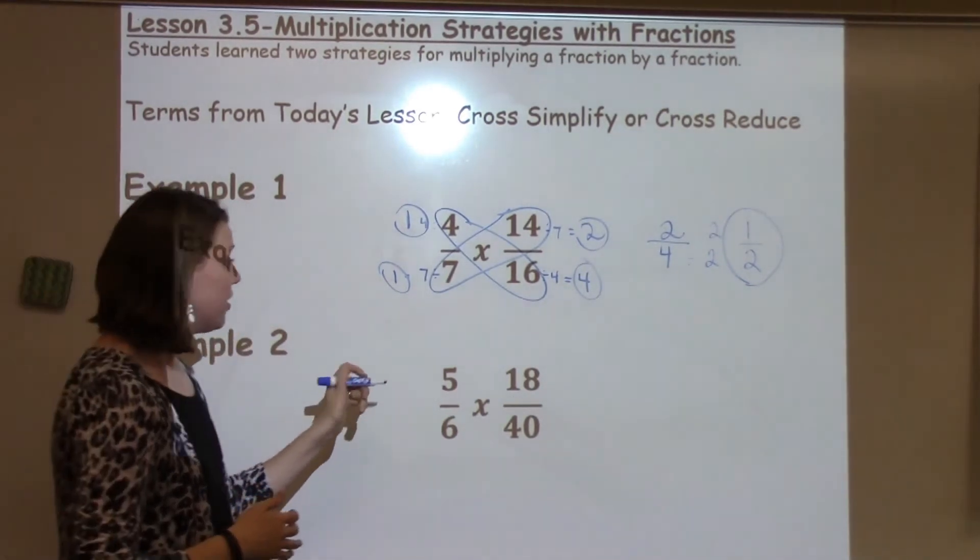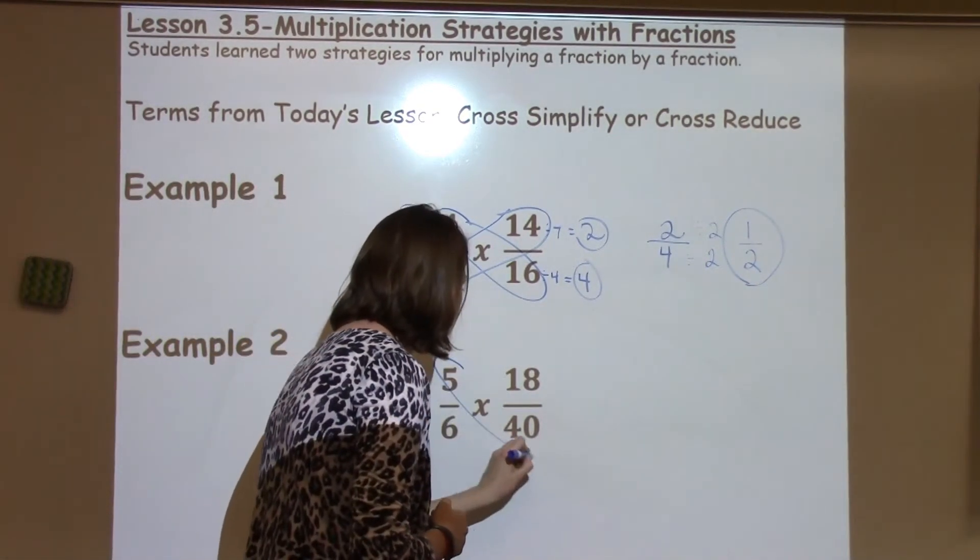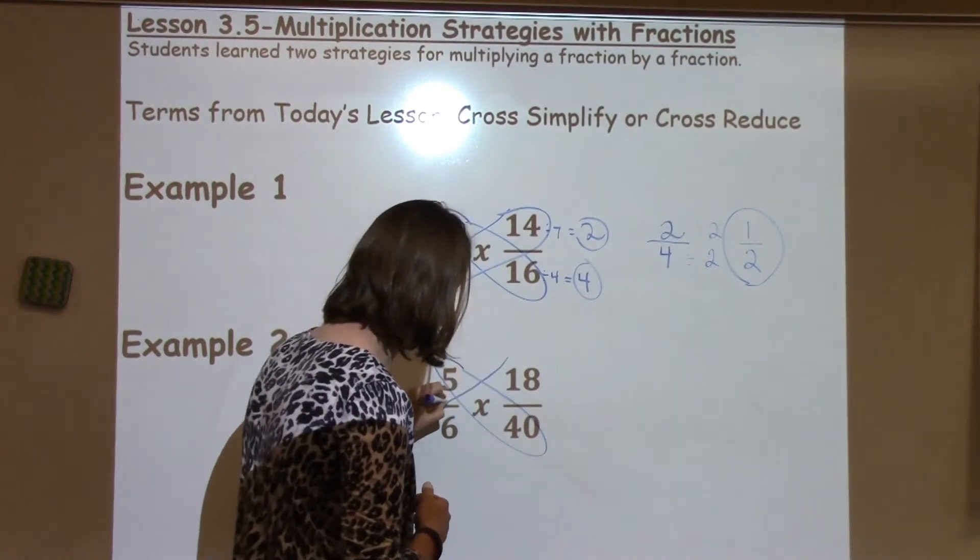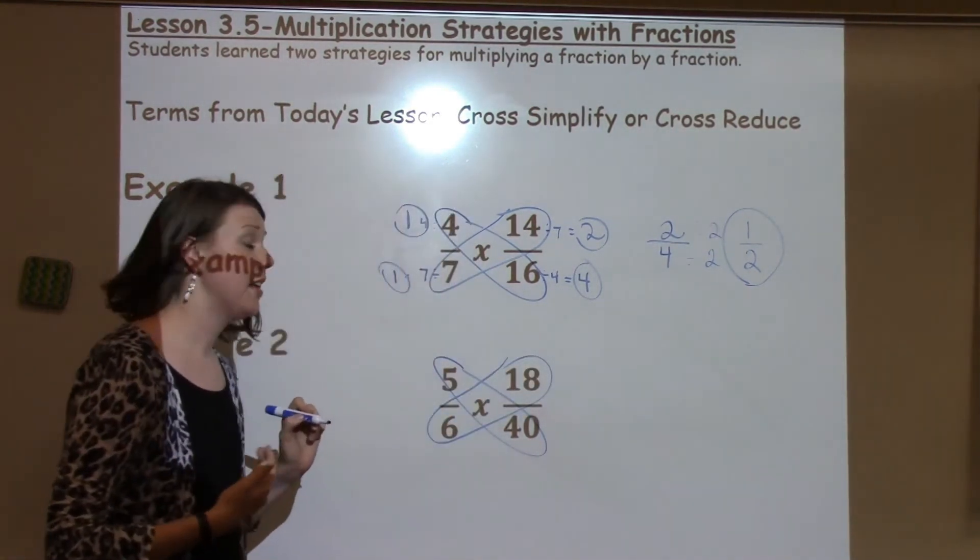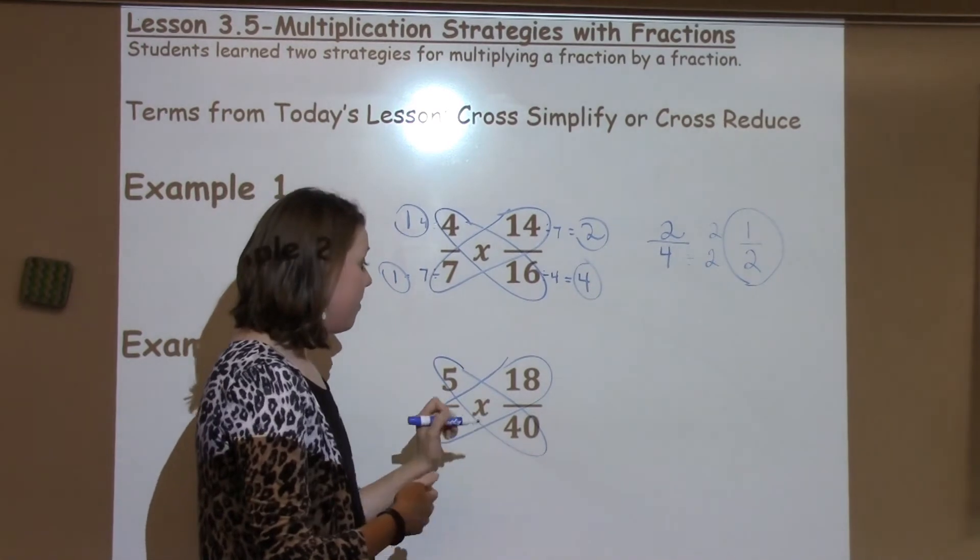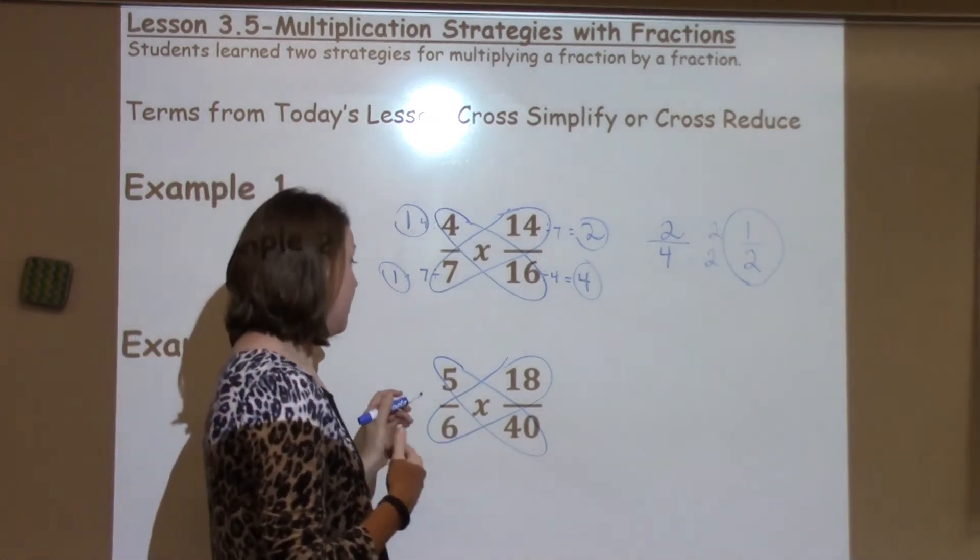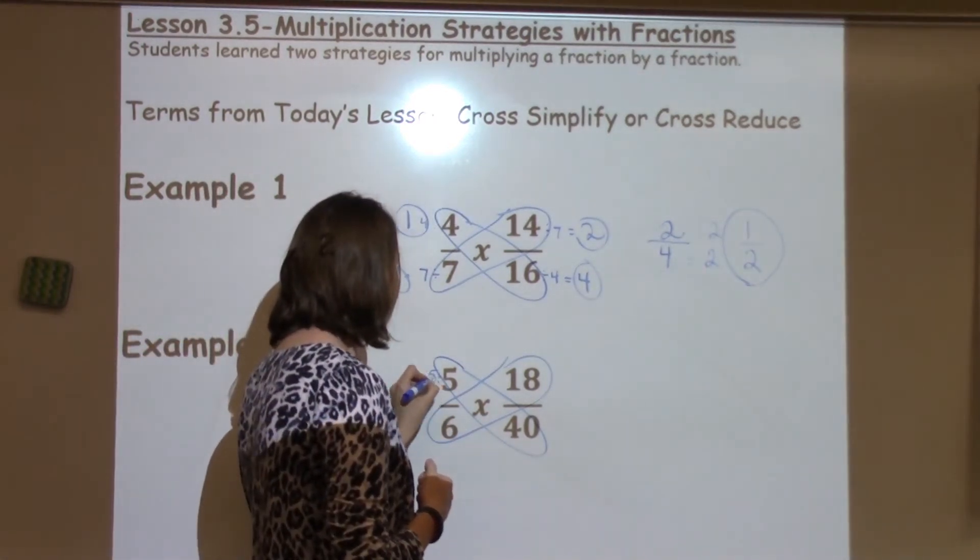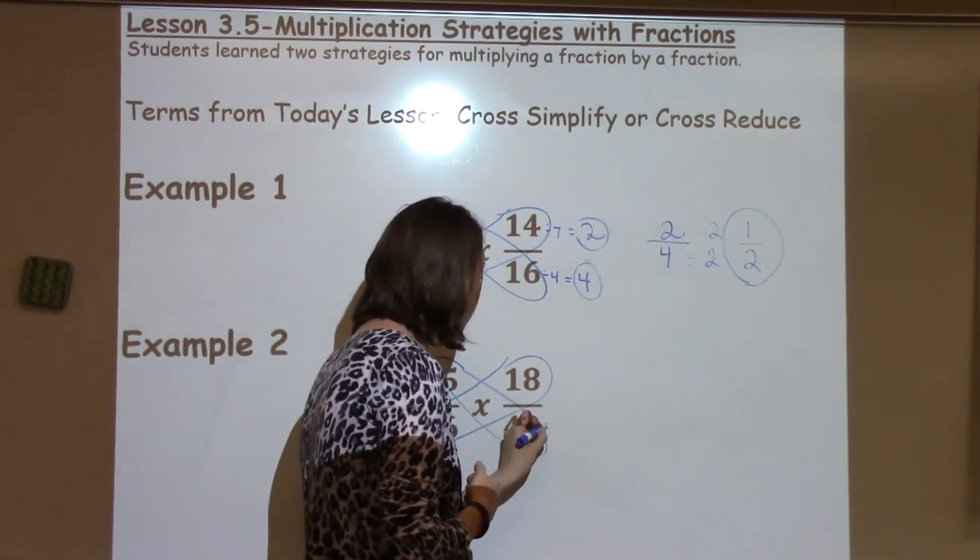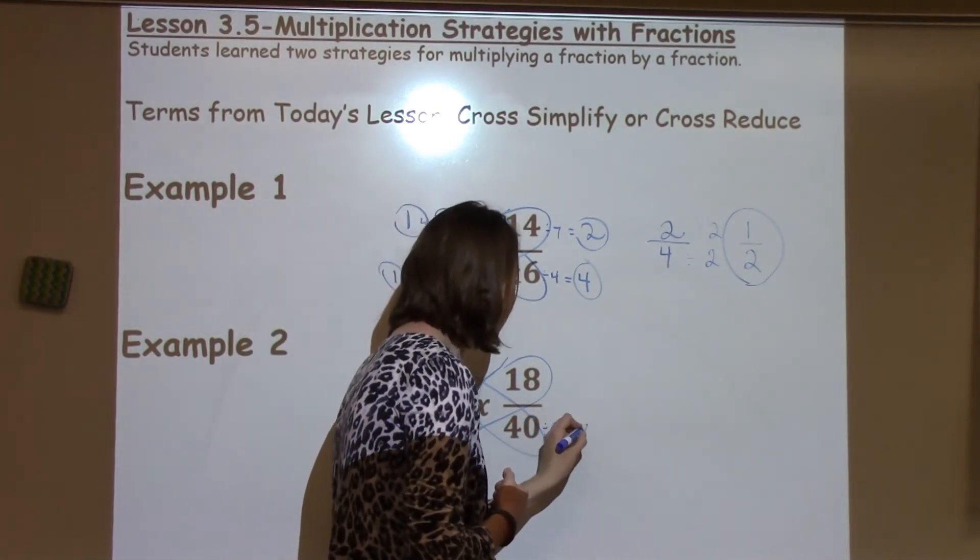On this other one, we're going to go ahead and draw our butterfly method again on the outside. And we're going to see what things that they share. I'm looking at the 5 and the 40, and I automatically see that they share 5. I know 5 divided by 5 is 1. 40 divided by 5 is 8.